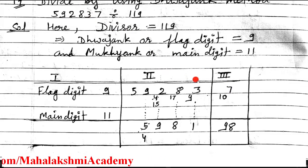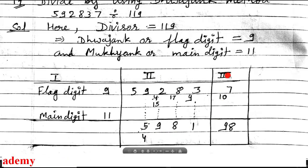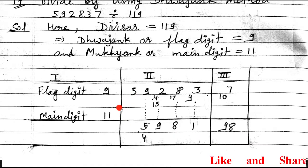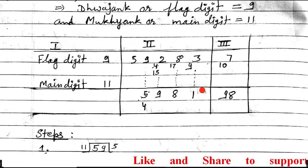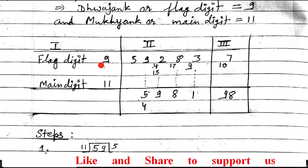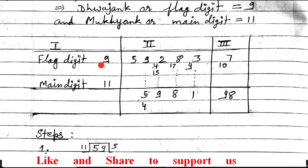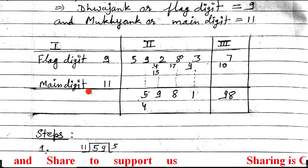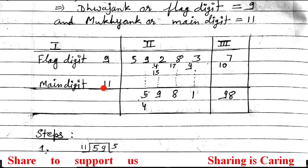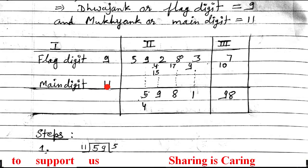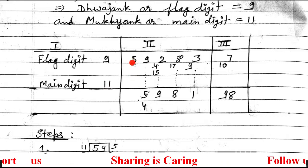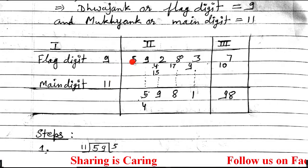The numbers in the second section are the dividend for you, and the third section answer is the remainder. The first number is 5. We divide by the main digit. The flag digit is only used to find the improved divider, which I will explain afterwards. So we start division from the main digit, which is 11. The first number is 5, which is less than 11, so we can't divide. That's why we mix 5 with 9 to get 59.